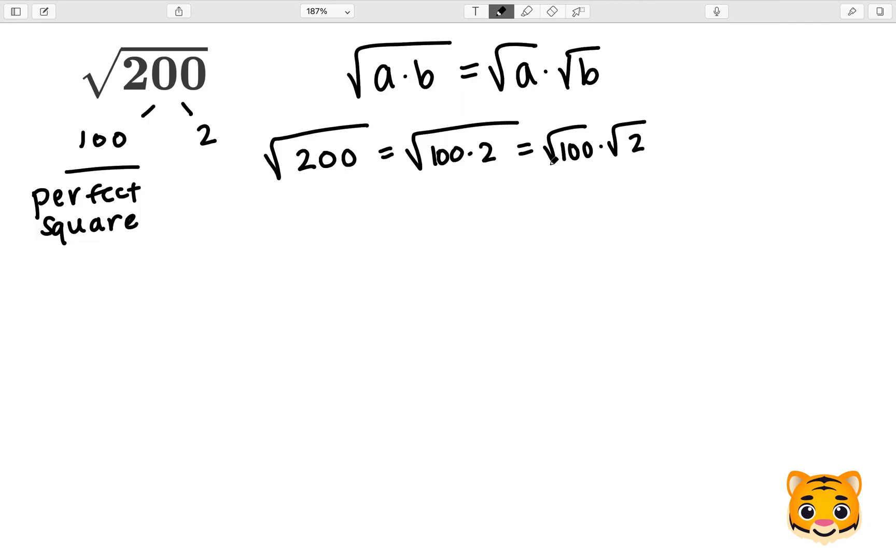Because 10 times 10 equals 100, we can see that the square root of 100 will be 10. Therefore, the square root of 200 can be rewritten as 10 times the square root of 2.